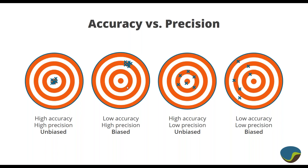The second graphic has some bias — we still have high precision because there's not much spread in these results, but there's a systematic error in their location. We could have the opposite case where there's no overall bias but the precision is low, and we could be in the worst case where we have a bias and we have poor accuracy as well.